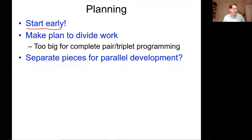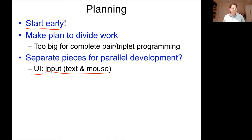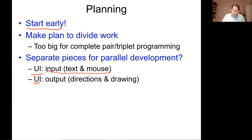Trevor suggests one person on UI, another on directions, another on search. A clear division is UI versus algorithm. You can separate the user interface further — take the input part (clicking on intersections or typing street names) and the output part (drawing directions, writing them beside each piece of the path). One of these feeds into the algorithm, the other comes out of it — they're not tightly coupled.